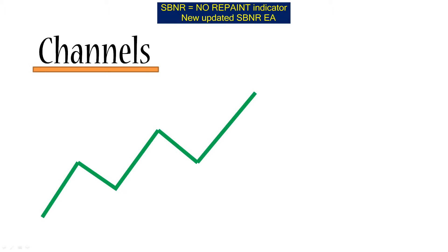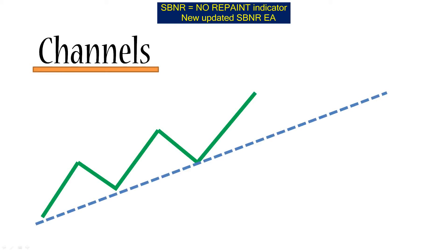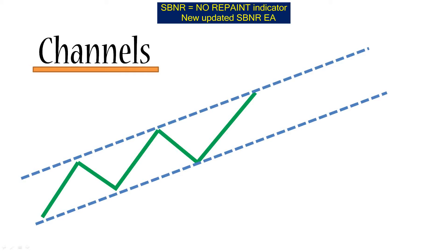We have an upward trend, and as discussed previously, we can draw a support line which represents a diagonal guiding the price — the price keeps bouncing off it on its journey to the top. We then take this diagonal, copy it, and place it above the price at the same angle, sitting on one of the highs. As you can see, the price is also bouncing off this upper diagonal, and the price is now moving in a channel or corridor.